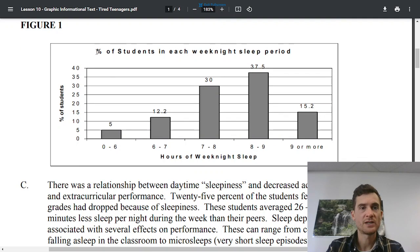So what do we see here? We look at the top first, just like the title, percent of students in each weeknight sleep period. So sleep periods and how much sleep they're getting, the percent of students that are getting that sleep. So here's the percent of students, 0, 5, 10, 15, 20%. So as we go up, there's five and there's five, right? It's following that line. It says five there. So that's helpful. Hours of weeknight sleep. Okay. We see the hours. Here's zero to six hours, six to seven hours, seven to eight hours, eight to nine hours. That's how much they're actually sleeping.